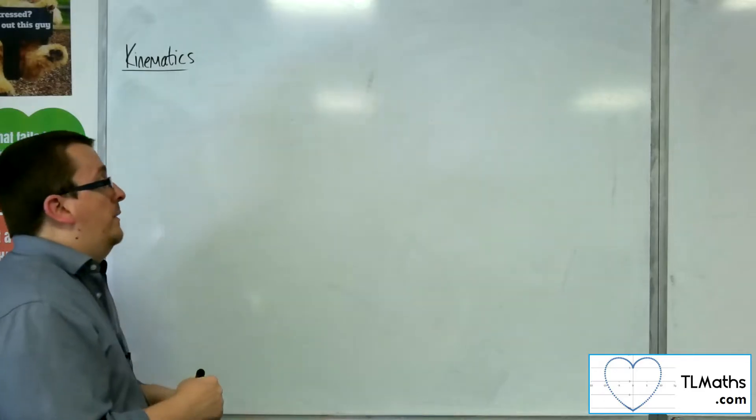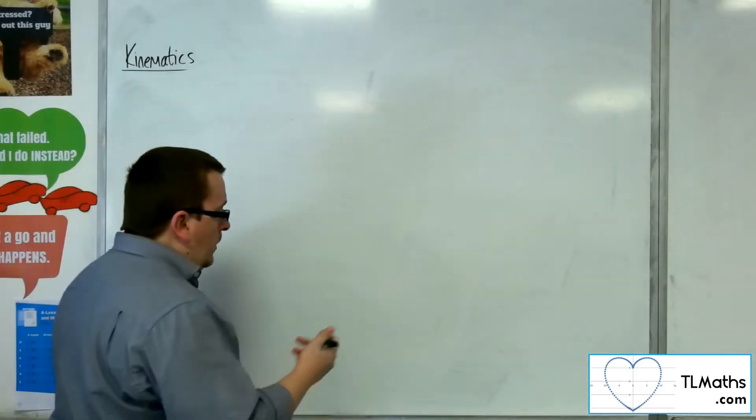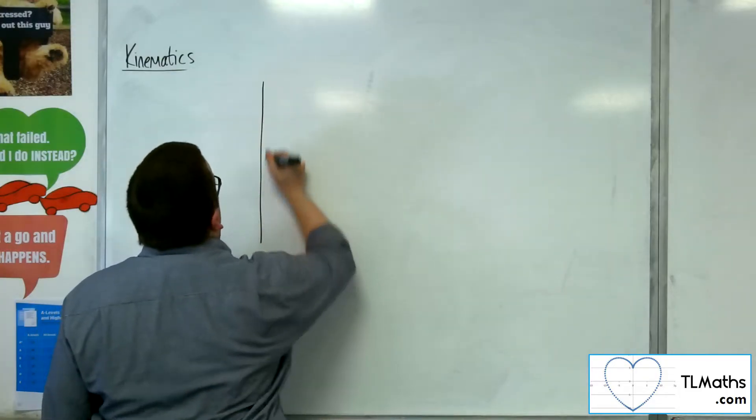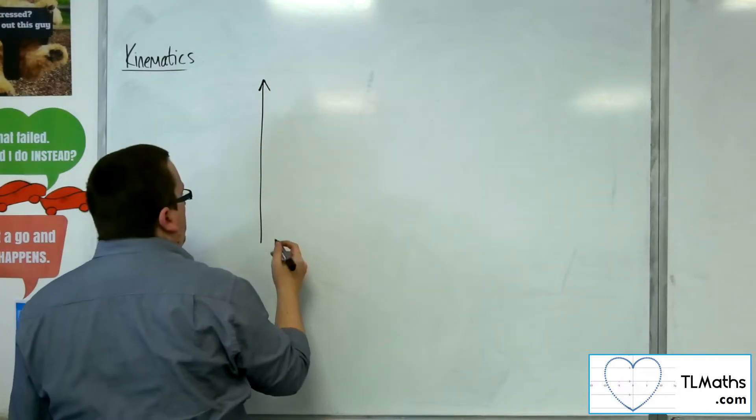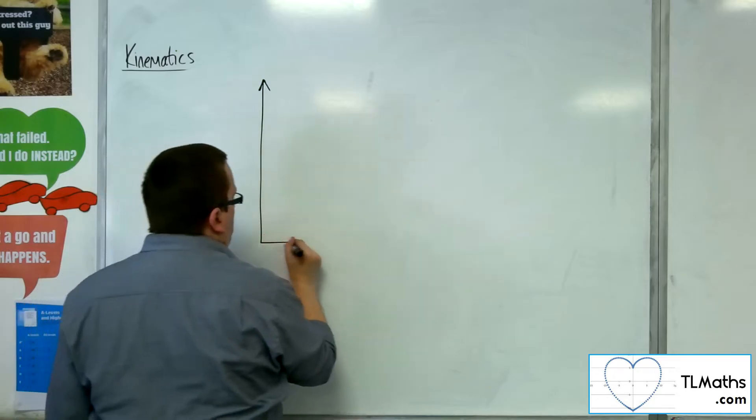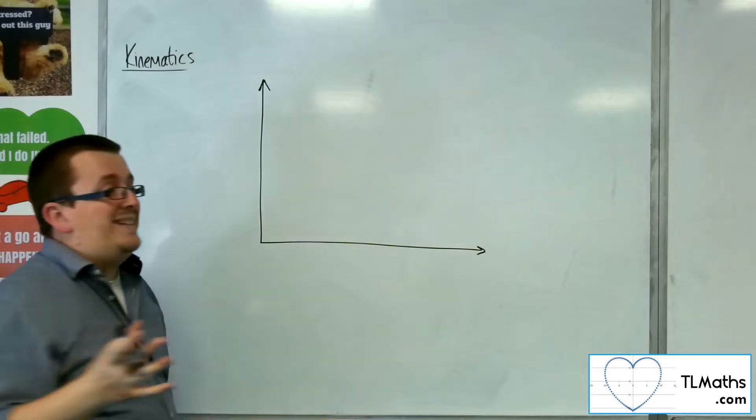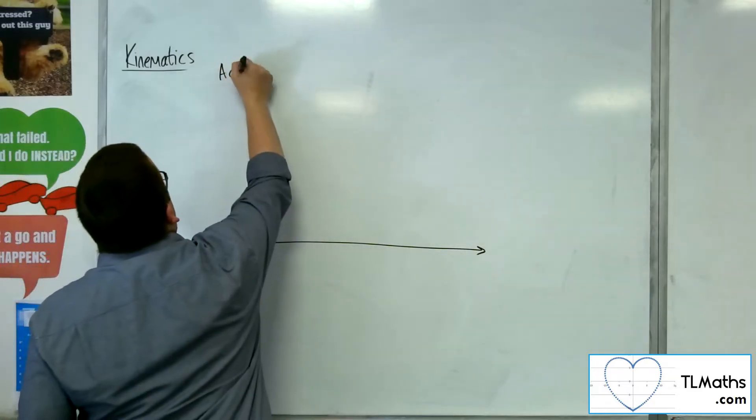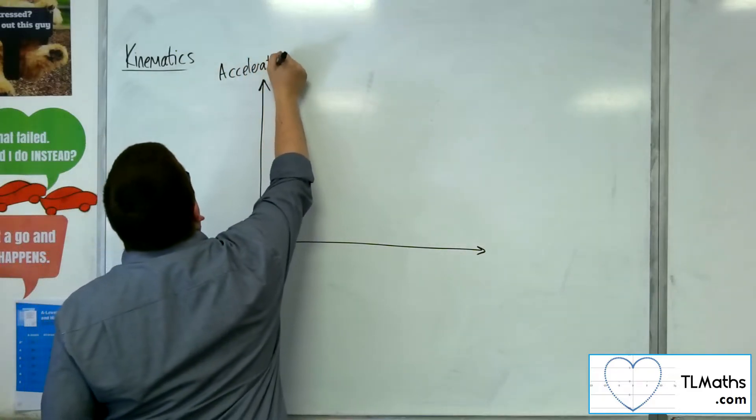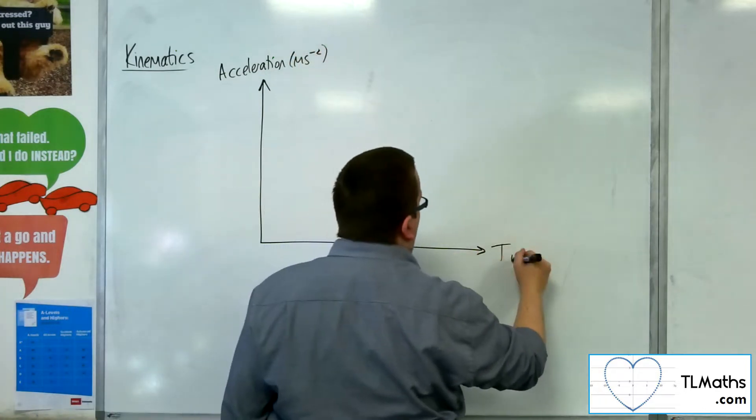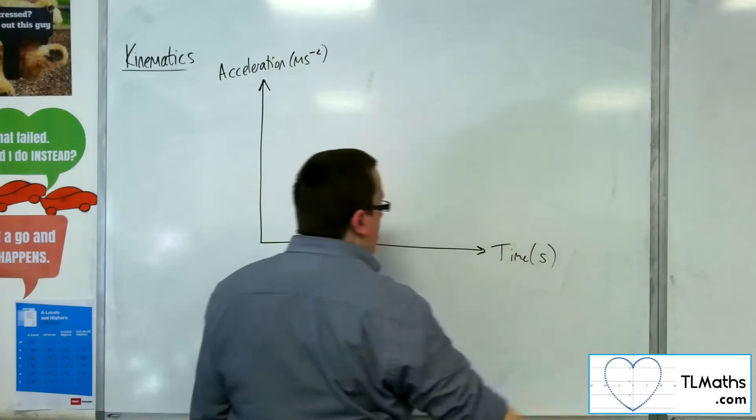Acceleration-time graphs can be a little bit more difficult to really interpret what is going on for a particle. So let's say we had a basic example. We've got the acceleration here in meters per second squared, and then we've got time in seconds.